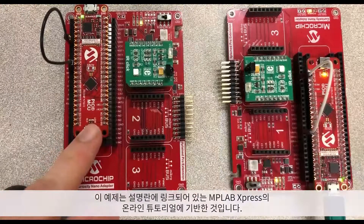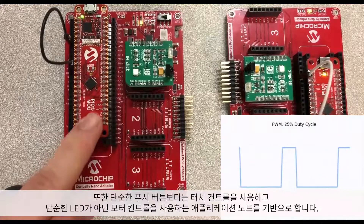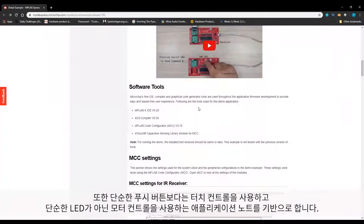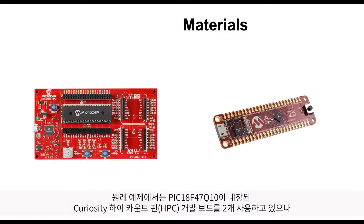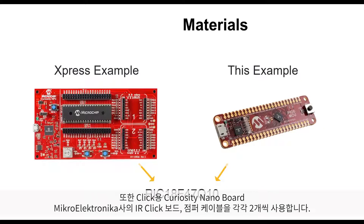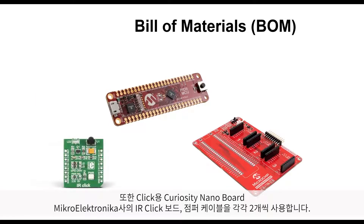This example is based on the online MPLAB Express tutorial linked in the description. The Express tutorial includes the source code and is based on a larger application note that uses touch control rather than a simple push button and motor control rather than a simple LED, so feel free to check that out. Unlike the original example that uses two Curiosity high pin count development boards with the PIC18F47Q10, I'm going to use two PIC18F47Q10 Curiosity Nanos, two Curiosity Nano baseboards for clicks, two MikroElektronika IR clicks, and a couple of jumper cables.